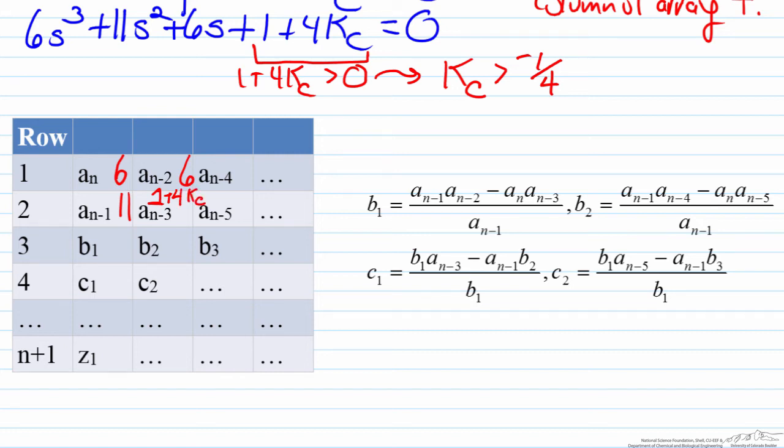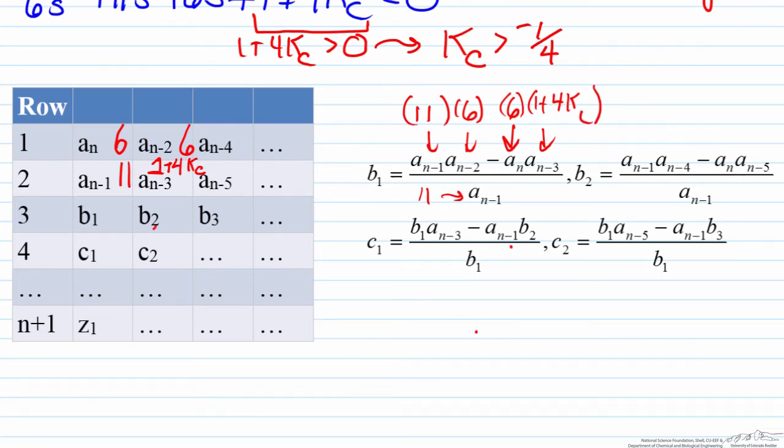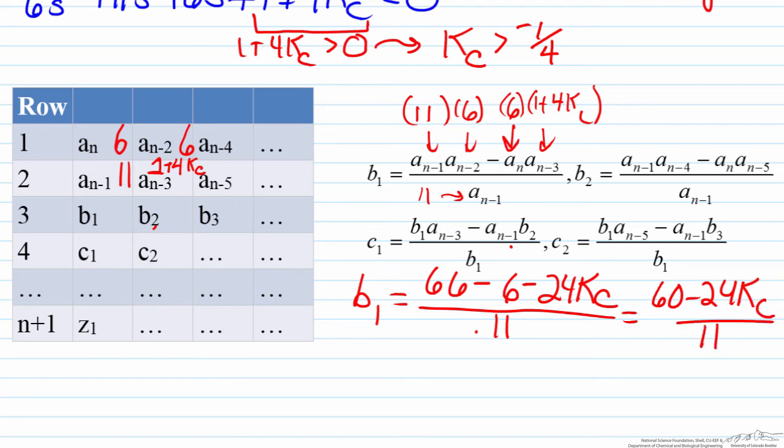Using this information we can solve. For b₁ we have a_(n-1) being 11, which will appear in the numerator and the denominator. a_(n-2) is 6, just as a_n is 6. And a_(n-3), the constant, is 1+4KC. So for b₁ what we are left with is (60-24KC)/11.